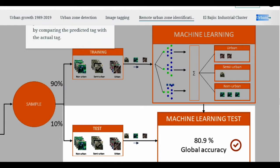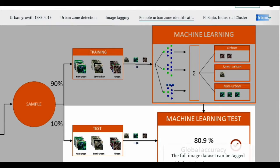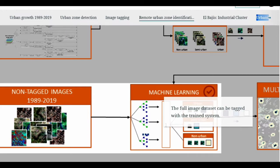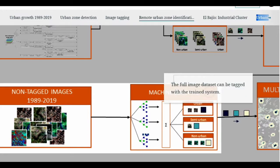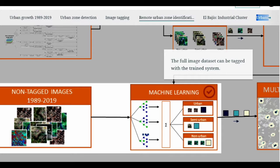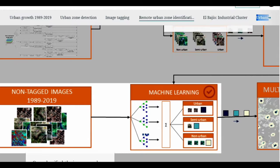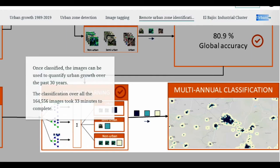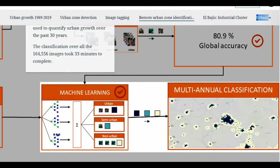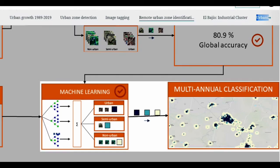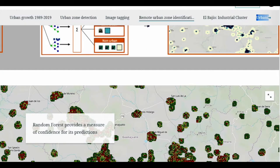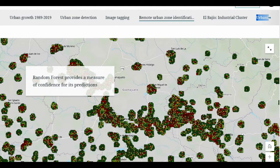Once this is done, the algorithm is used on the testing dataset to evaluate how well the algorithm learned and recognized each class. This way, it is possible to measure its accuracy. Finally, once an adequate performance is achieved, all unlabeled images can be classified for each of the annual Landsat GeoMedian images, which go from 1989 to 2019. As a result, we can trace urban growth throughout time in different regions of the country.